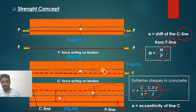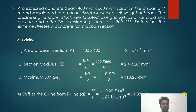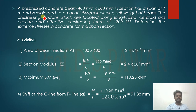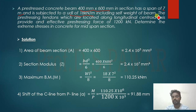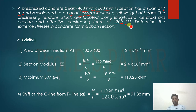Now, based on the strength concept, we are going to solve a problem. The problem statement: a prestressed concrete beam, 400 mm × 600 mm in section, has a span of 7 meters and is subjected to a UDL of 18 kN/m including self-weight of the beam. The prestressing tendons are located along the longitudinal central axis and provide an effective prestressing force of 1200 kN. We need to determine the extreme stresses at mid-span.